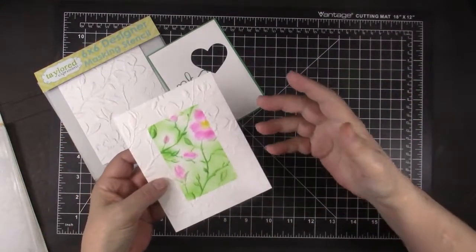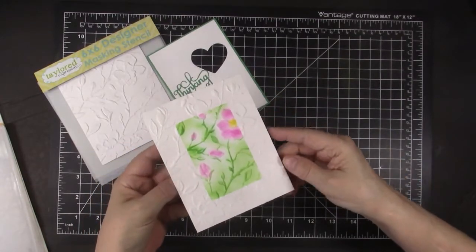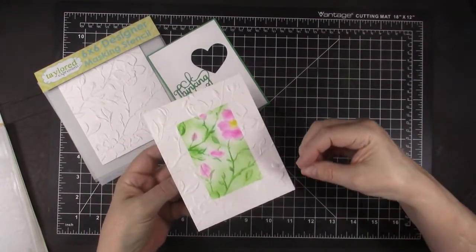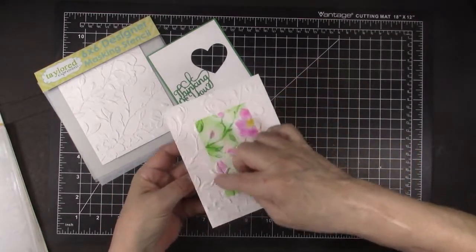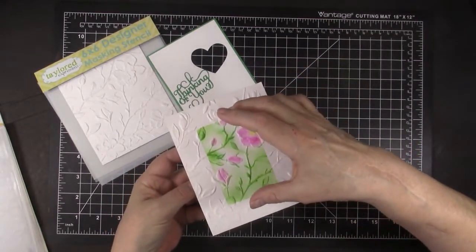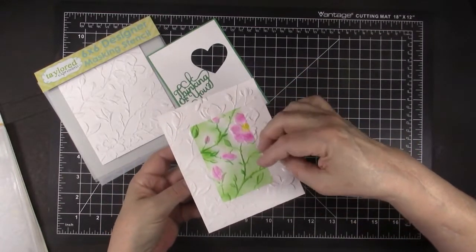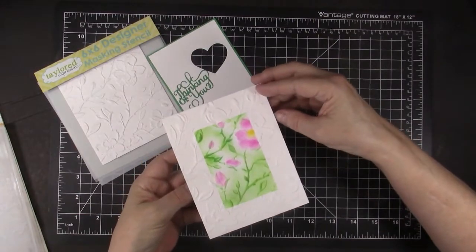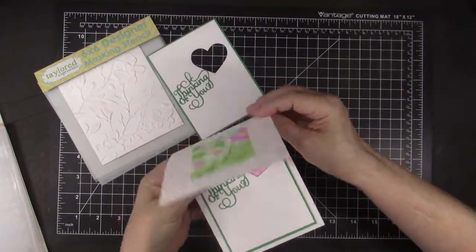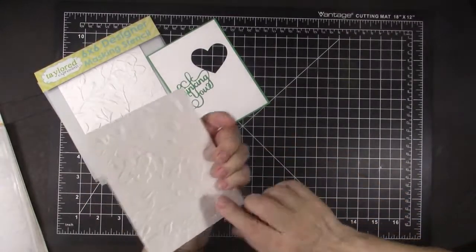So again, this is one of my favorites of the cards that I made. And I used that Magnolia Branch embossing folder. And I again used a layering masking stencil from Tailored Expressions that I'm going to show you.